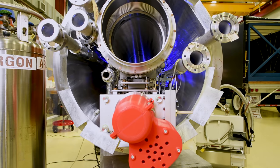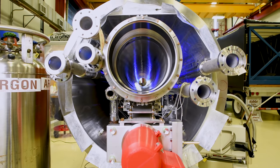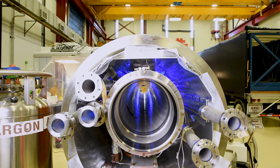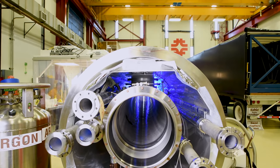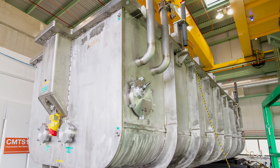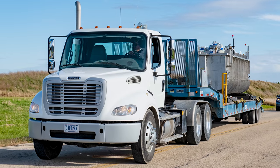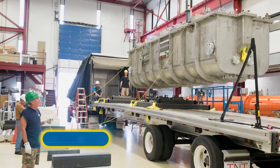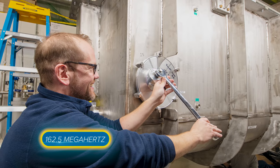The cavities are installed inside cryomodules. These are large cryogenic vessels that insulate the cavities and surround them with liquid helium to keep them at their ultra-cold temperature. The first cryomodule for PIP2 was built at Argonne National Laboratory and delivered to Fermilab in 2019. It operates at the radio frequency of 162.5 MHz, the same as the RFQ.